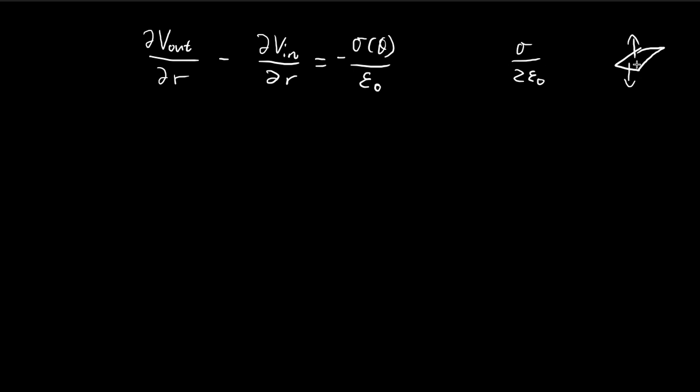And then you know that the electric field applies to completely different directions once you pass the plane. So the difference between these two electric fields is essentially just this times 2, so you get sigma over epsilon.